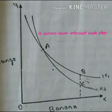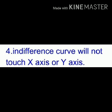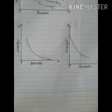The next feature is that the indifference curve will not touch the x-axis or y-axis. If it touches the x-axis, the consumer would consume only one good — mango consumption would become zero. If it touches the y-axis, banana consumption would become zero. It is not possible for the consumer to consume only one good, so the indifference curve will not touch either axis.